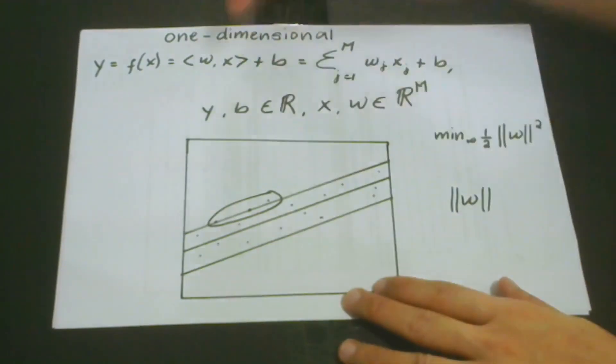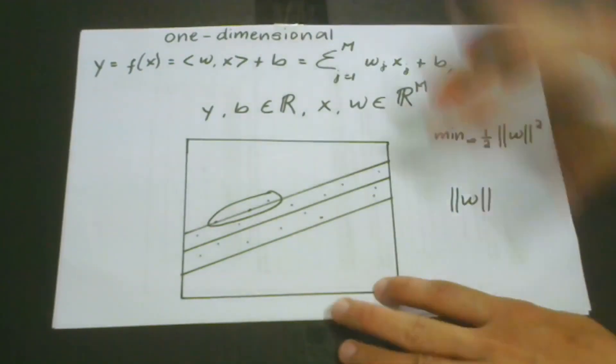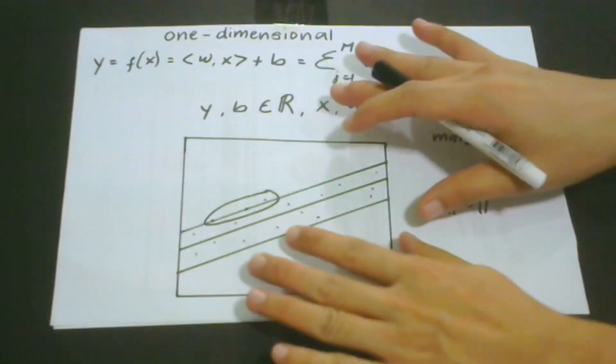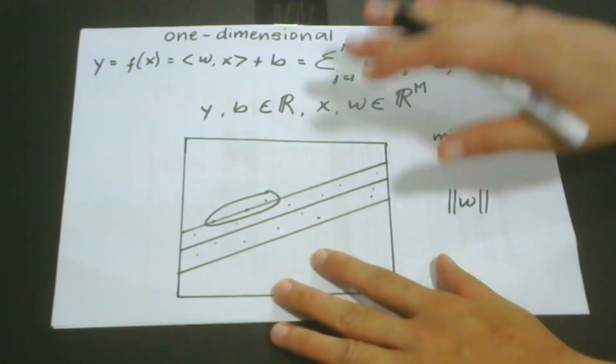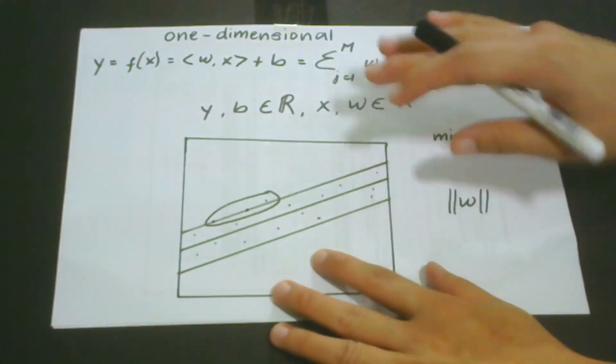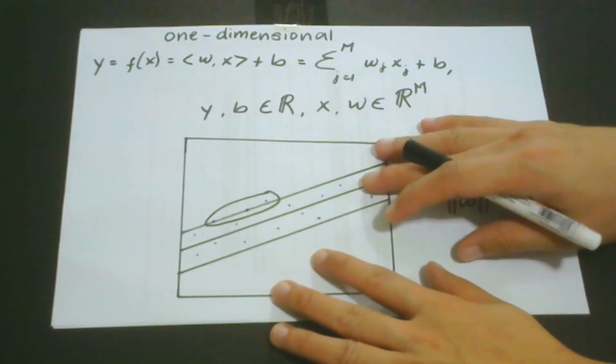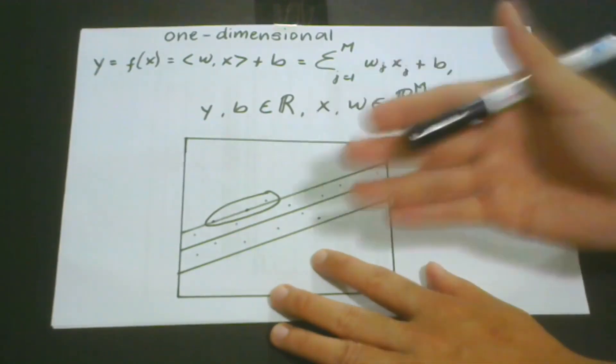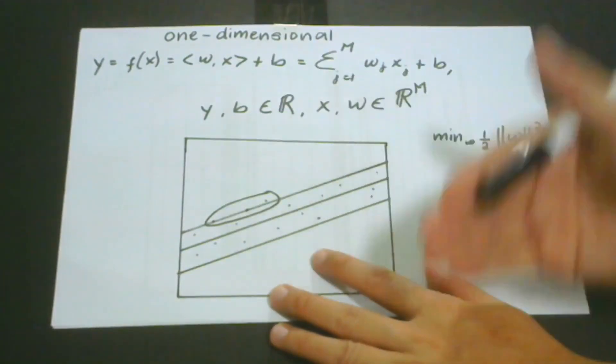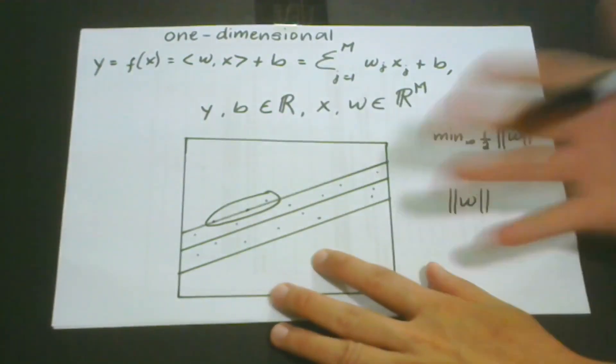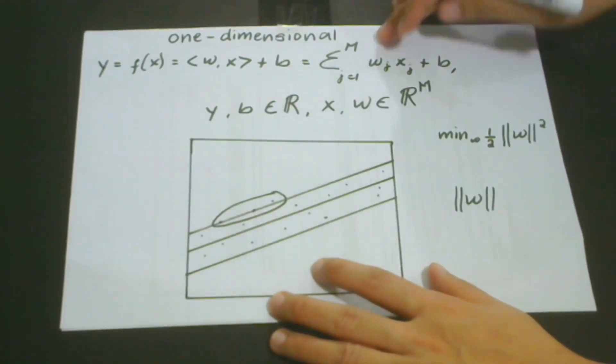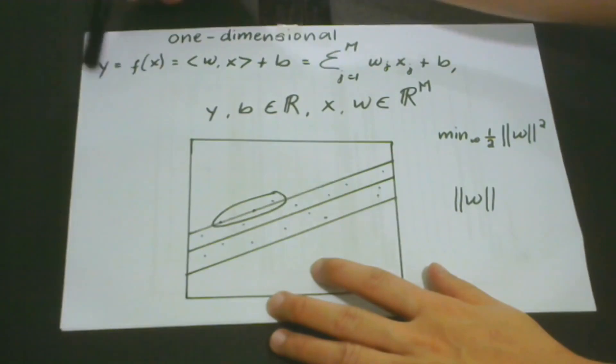The formulation of our support vector regression problem may depend on how many features a certain problem has. One-dimensional has only one feature, and multidimensional contains two or more. This presentation would be best understood if you've already studied our Mastering Machine Learning Algorithm playlist, which provides the foundation of the algorithms we discuss.